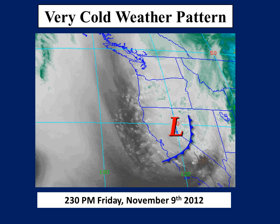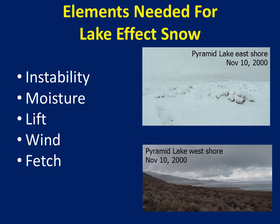Let's take a look at the elements required for LakeFX snow to develop. The elements needed are instability, moisture, lift, and wind direction oriented along a long fetch of the lake. The picture on this slide is from a previous lake effect snow event in November of 2000 at Pyramid Lake, which shows the contrast between snow developing over the lake and affecting the east shore with no snow across the west shore.